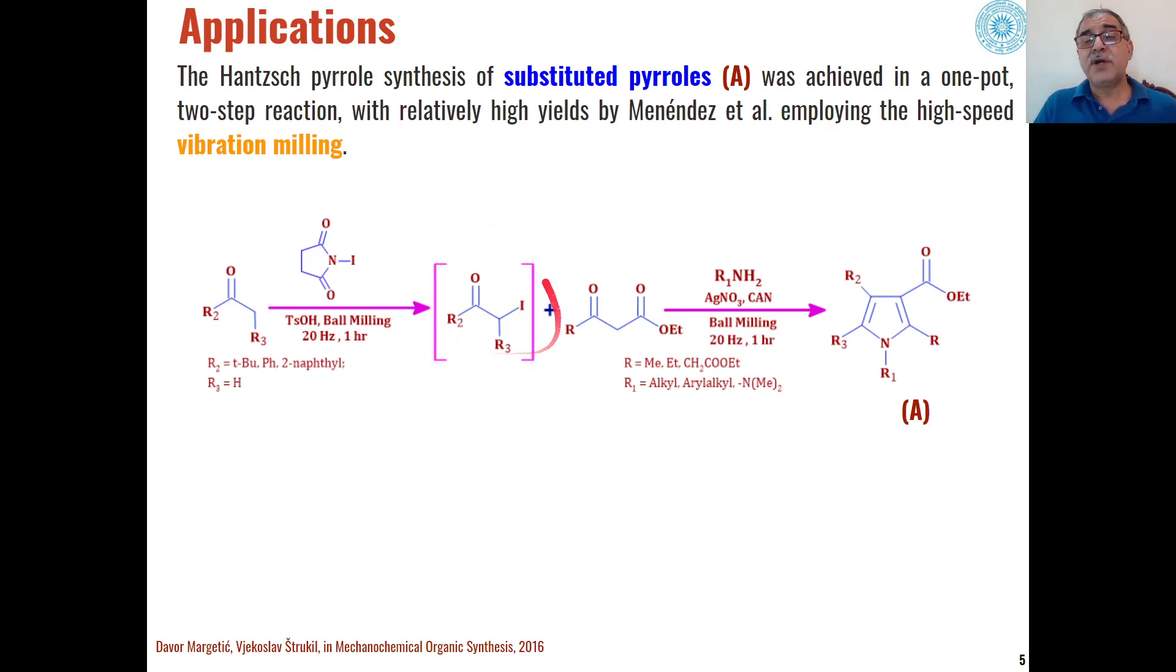These alpha-iodo ketones react with beta-keto esters in presence of primary amines as the nitrogen source. Through ball milling, they are converted into these types of pyrroles.